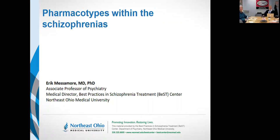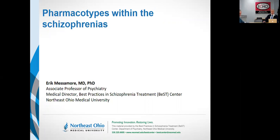I'm going to talk today about what I call pharmacotypes within the schizophrenias. There are two words I'll point out at the beginning. First, pharmacotypes, which is a word that I believe I've made up myself to describe the subtypes of illness that can be defined on the basis of drug response.